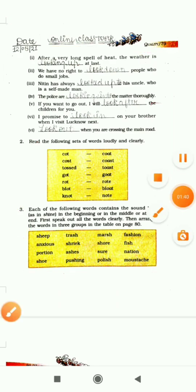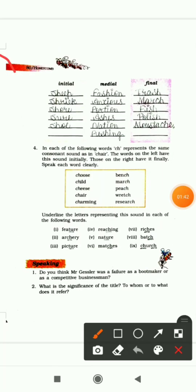You can see on page number 83 categories are there. Here it is initial, if the sound is coming in the starting. Medial, if the sound is coming in the middle. Final, if the sound is coming at the end. So initial sounds are sheep, shriek, shore, shore, and shoe. In all the words you can see sound is coming in the starting only.